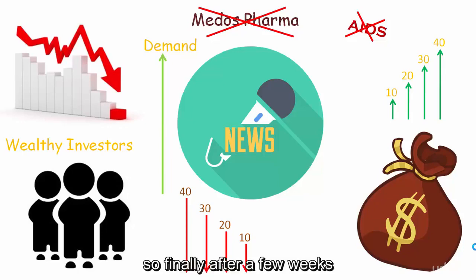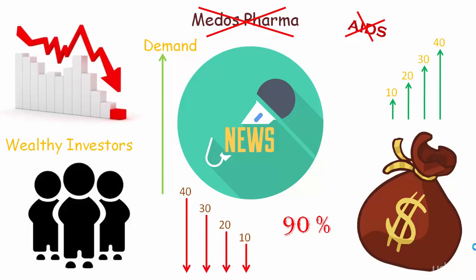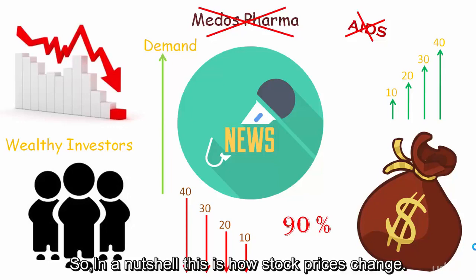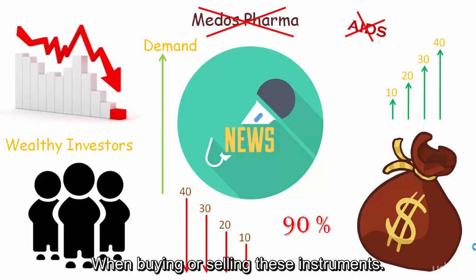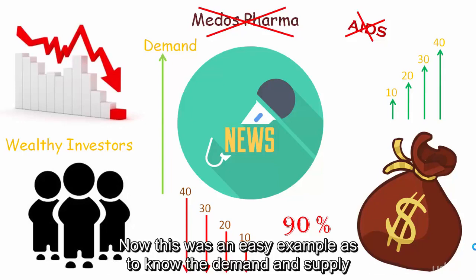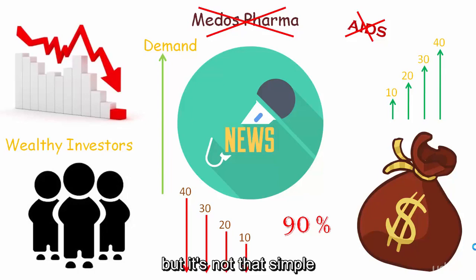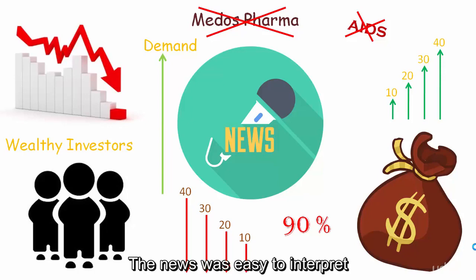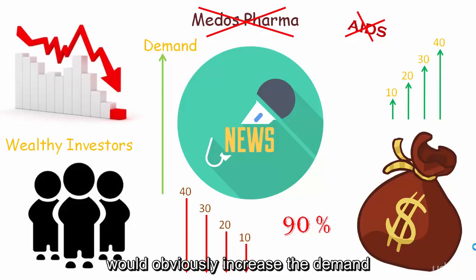After a few weeks, prices were down 90% from peak levels due to tremendous supply and no demand. In a nutshell, this is how stock prices change — demand and supply principles are always in action. However, this was an easy example to understand; it's not that simple in reality, because the news in this case was easy to interpret: launching a revolutionary product obviously increases demand.